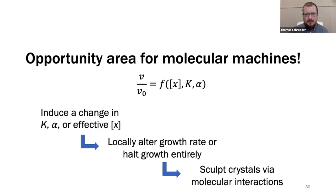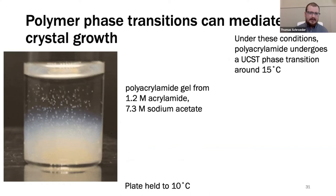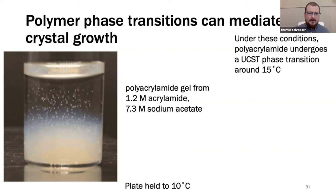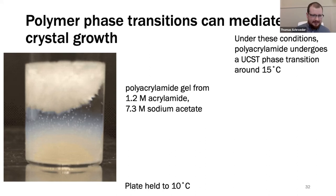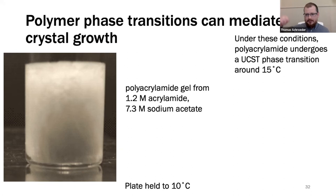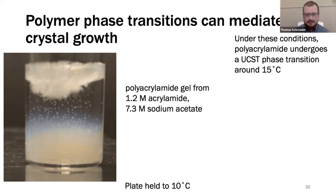I'll give a final example of a way forward. I've been using polyacrylamide as my additive, and it turns out that under certain conditions, polyacrylamide undergoes a so-called UCST phase transition — the opposite of what NIPAM does. Basically, it exists in a well-solvated coil conformation above a certain threshold temperature, but below that threshold it collapses into insoluble globules. Here I have a vial of this gel sitting on a cold plate held at 10 degrees Celsius — you can clearly see the bottom is turbid because that part is below the critical transition temperature. I'm going to nucleate the vial from the top and you'll see crystal growth proceeds at one rate until it reaches the cloudy region, at which point it moves much faster.